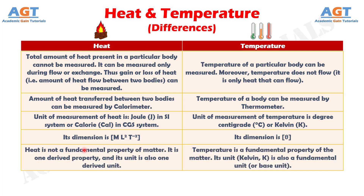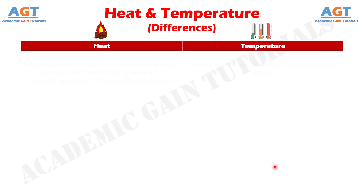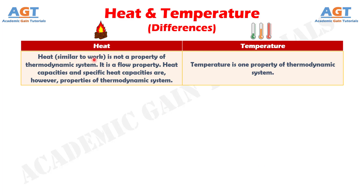Difference No. 9: Heat is not a fundamental property of matter. It is a derived property, and its unit is also a derived unit, whereas temperature is a fundamental property of matter. Its unit, Kelvin, is also a fundamental unit, or base unit. Difference No. 10: Similar to work, heat is not a property of a thermodynamic system — it is a flow property. Heat capacities and specific heat capacities are, however, properties of a thermodynamic system, whereas temperature is one property of a thermodynamic system.